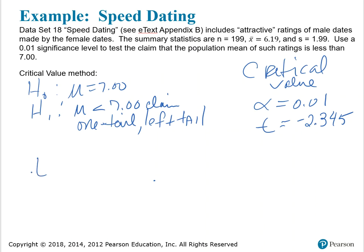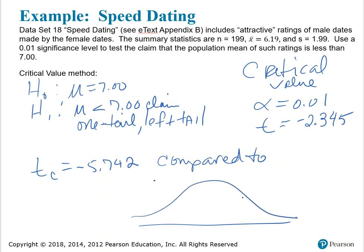Now my calculated test statistic was negative 5.742, and I compare that to the critical value of negative 2.345. If the test statistic lies in the critical region, here's negative 2.345, that's the critical value. And my test statistic would lie over here. This is the critical region. And since that is in the critical region, then I reject H sub 0.